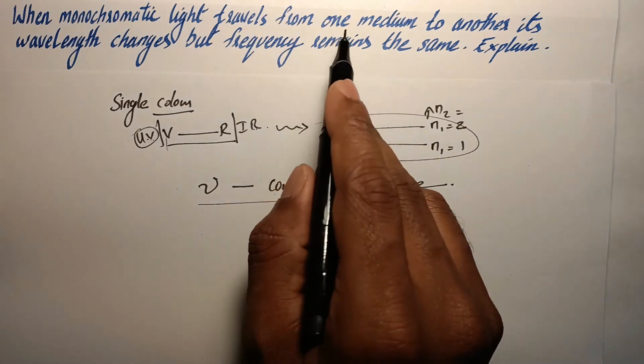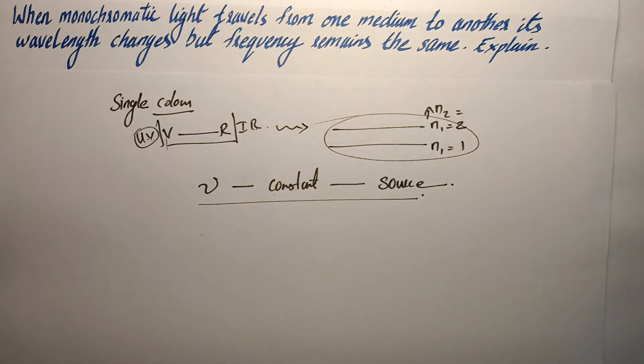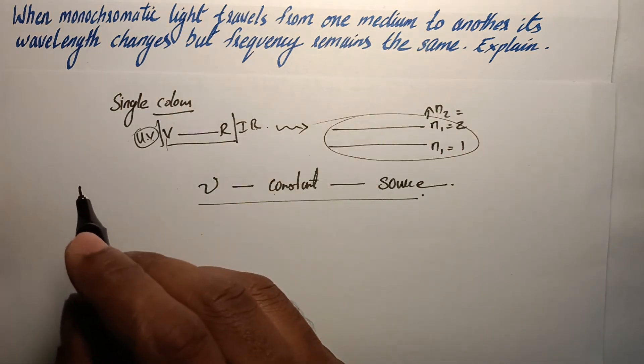But when we change the medium, the wavelength changes. It can be explained in two ways.